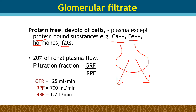Therefore, the filtrate that forms is similar to plasma but without cells and without proteins — it is essentially a protein-free plasma. If you take plasma and remove all proteins, whether free plasma proteins or proteins bound with other substances, you get the glomerular filtrate. About 20 percent of the plasma is filtered.